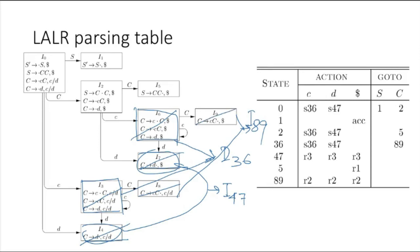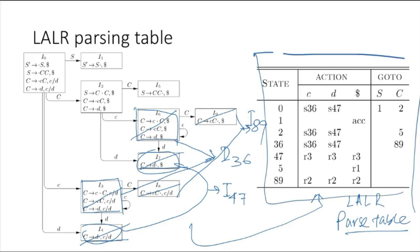So this is our, you can say, LALR transitions or item sets, and from here we can create this parse table, and this will be called as LALR parse table. I don't think we need to regenerate it again, I think we all understand this.